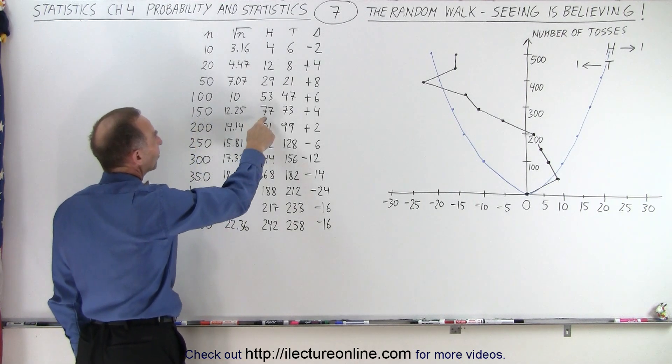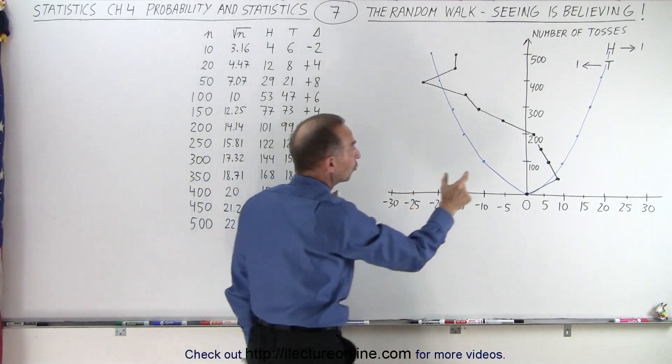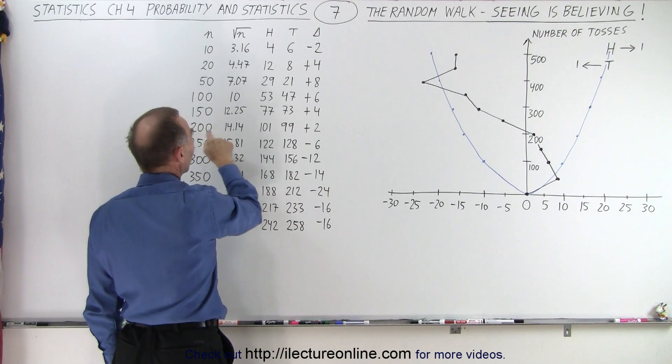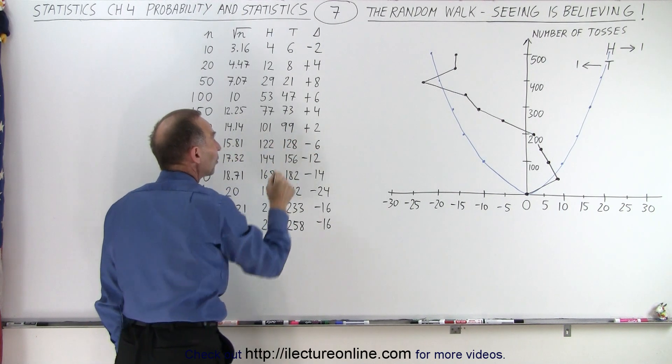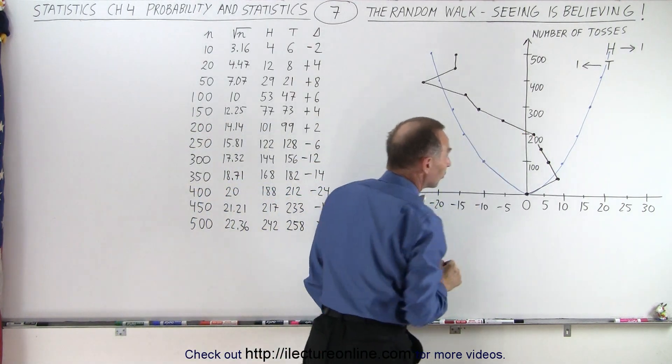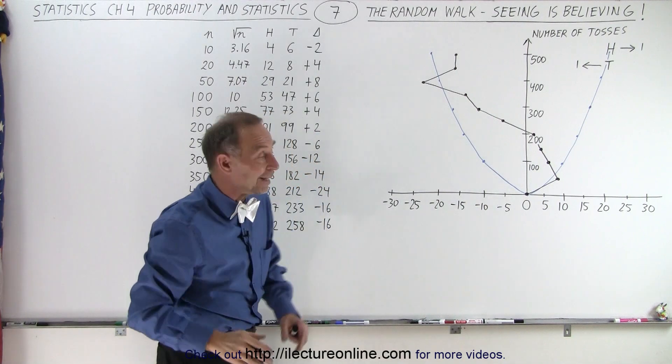After 150 tosses I had 77 heads and 73 tails. I was only 4 units away from the origin, and after 200 tosses I had 101 heads and 99 tails, and I was almost back where I started, only 2 units away from the origin. So it really looked like that theory of the random walk didn't make any sense.